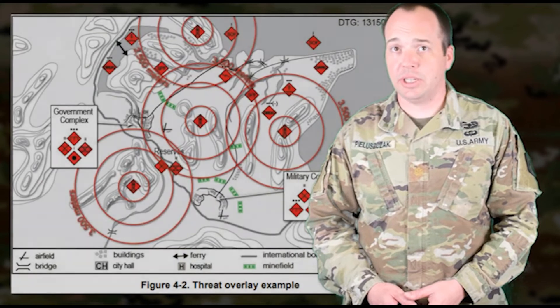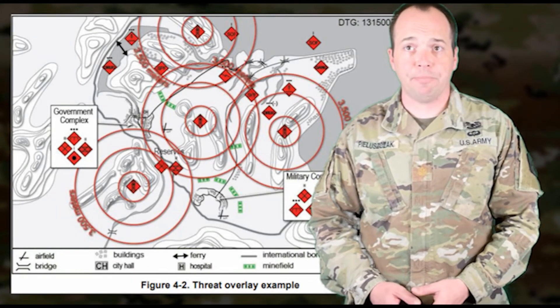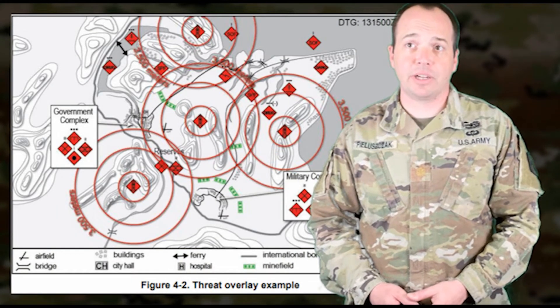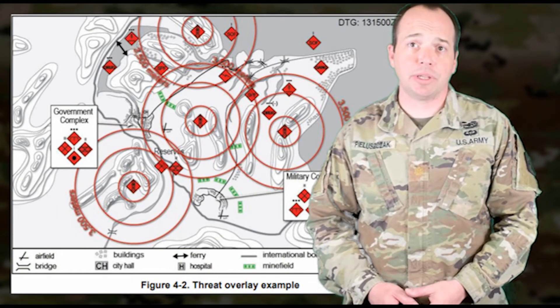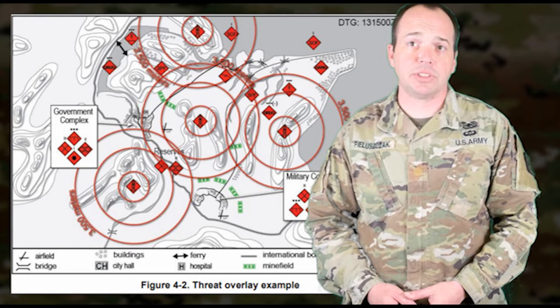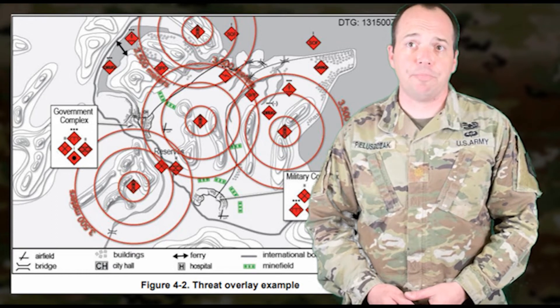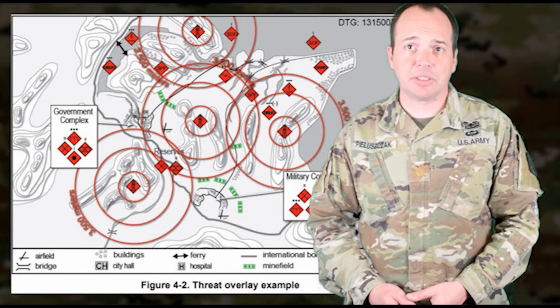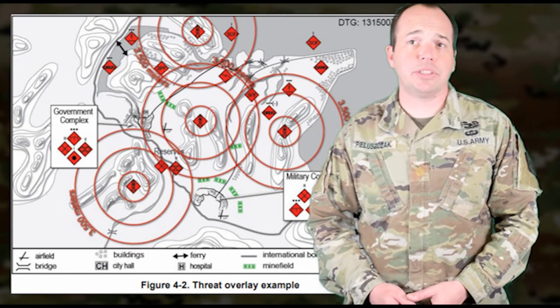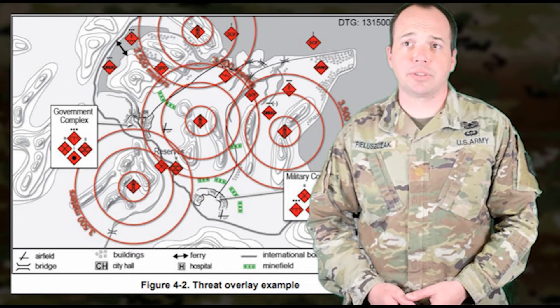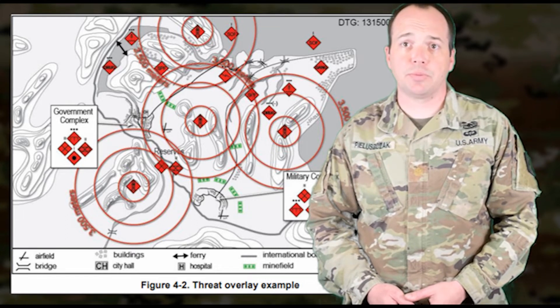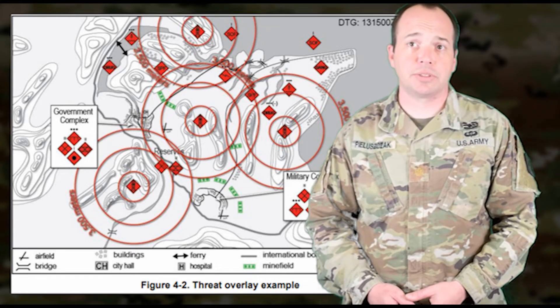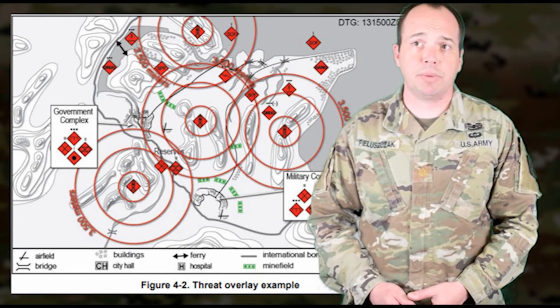One of the first overlays of the threat is generated in Step 2 with the threat overlay, identifying current known and templated threat positions in the AO. It should identify names of units, expected strength, and locations of varying units or types of threats with supporting range rings of primary weapon systems.